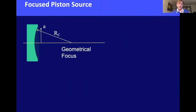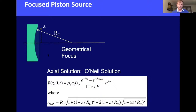In therapeutic ultrasound, focused transducers are often used rather than flat surfaces. The bowl-shaped transducer has a radius of curvature R_c and an aperture radius a, so it is characterized by two parameters: the geometrical focusing radius and the aperture radius. On axis, there is a solution known as the O'Neill solution giving pressure as a function of distance along the axis.